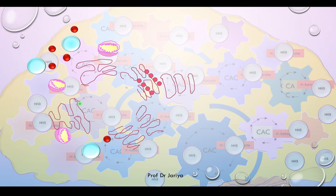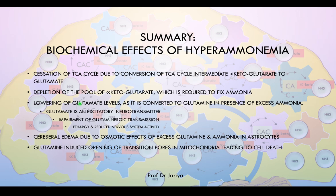To summarize, there are five main biochemical effects of ammonia on the brain: number one, the TCA cycle comes to a standstill; second, there is depletion of the pool of alpha-ketoglutarate; third, glutamate levels decline — glutamate being an excitatory neurotransmitter; fourth, there is cerebral edema due to osmotic effects of glutamine and ammonia; and finally, there is glutamine-induced cell death due to the opening of transition pores in mitochondria.